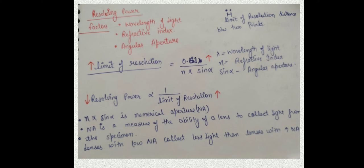The distance between those points is our limit of resolution. Resolving power depends on factors such as wavelength of light, refractive index, and angular aperture. The formula for limit of resolution is: 0.61 λ divided by (refractive index × sin α). This means limit of resolution is directly proportional to wavelength, and inversely proportional to refractive index × sin α. Refractive index × sin α is known as numerical aperture. So the limit of resolution formula becomes 0.61 λ / numerical aperture. Limit of resolution is inversely proportional to resolving power.